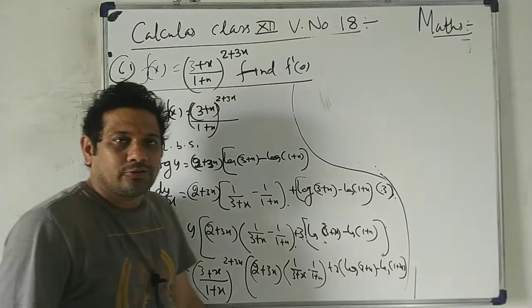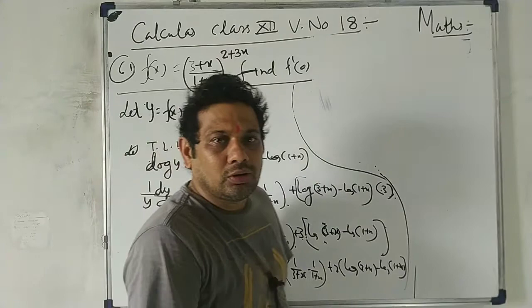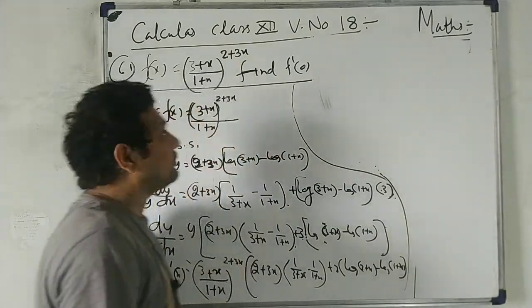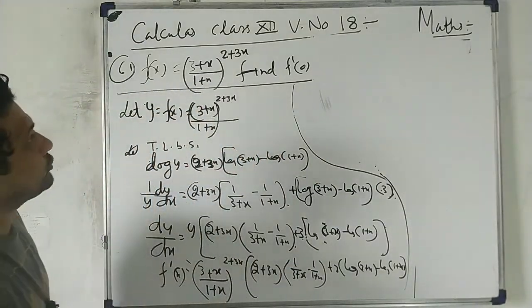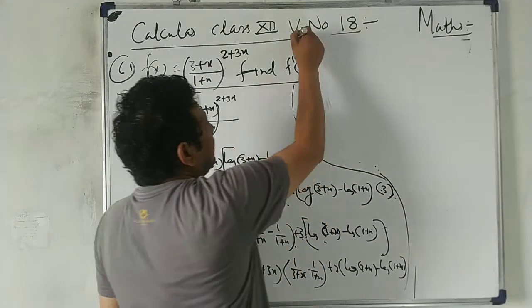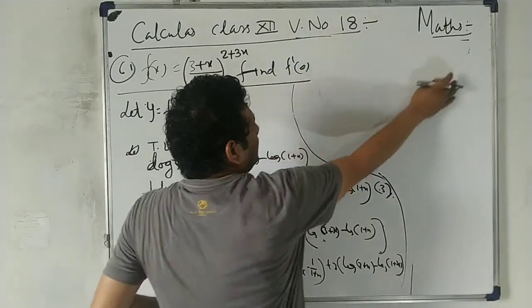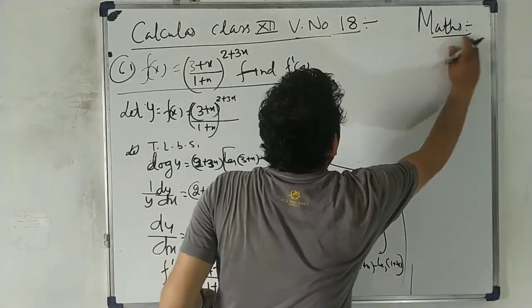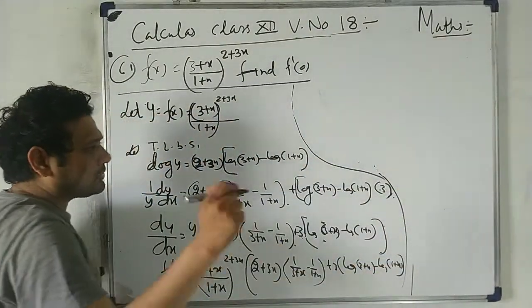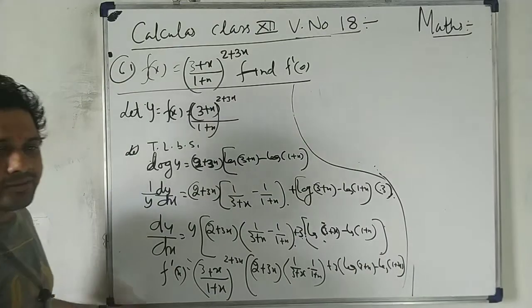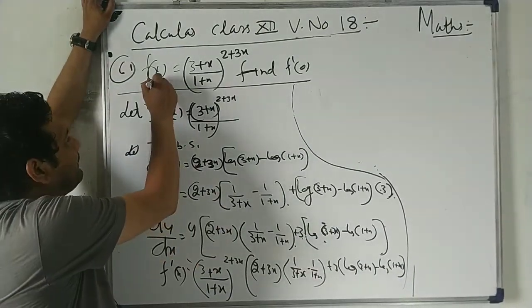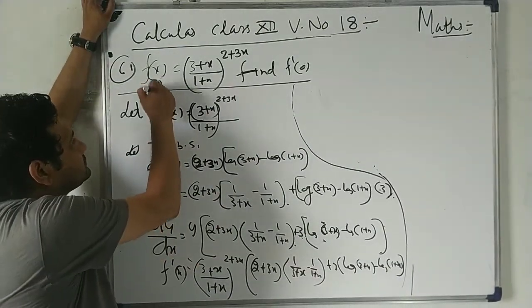Welcome to Gen Tutorials, the online class for physics, chemistry, and math. Today we're studying calculus, Class 12, video number 18. We've covered up to Exercise 10f — everyone should have solved those questions. Now let me show you one last question: f(x), which is also written as y, equals the given function.